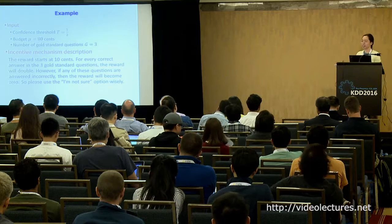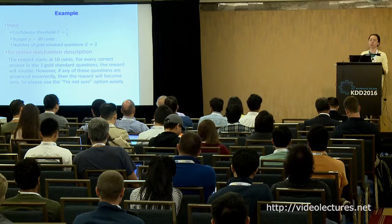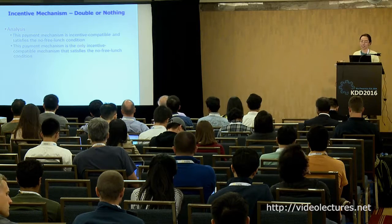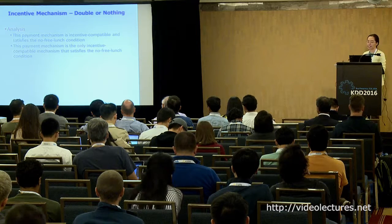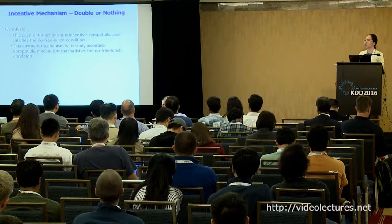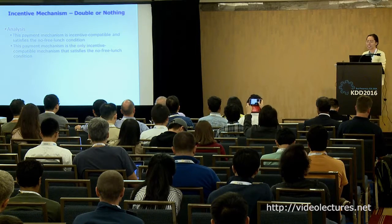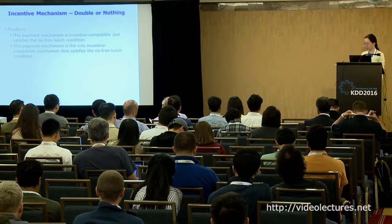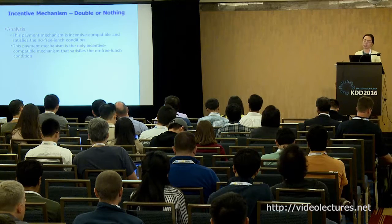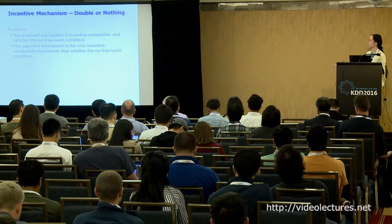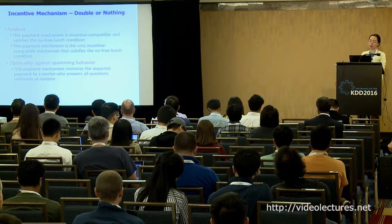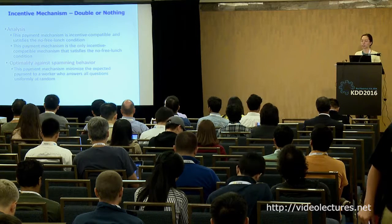The mechanism is easy to understand, which is important so workers know what is expected. Based on analysis, this payment mechanism is incentive compatible and satisfies the no-free-lunch condition: it allows workers to skip questions they're unsure of and workers get zero payment if they answer all questions wrong. Furthermore, the authors show this is the only incentive compatible mechanism satisfying the no-free-lunch condition. It also minimizes expected payment to a worker who answers all questions uniformly at random.